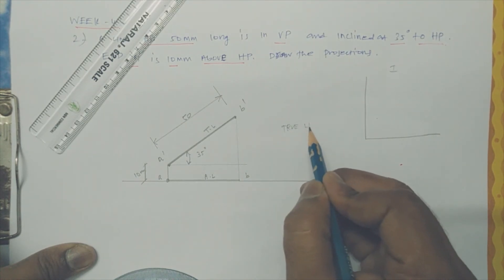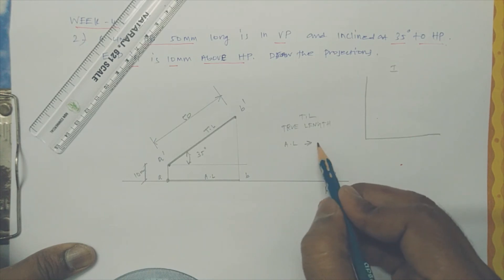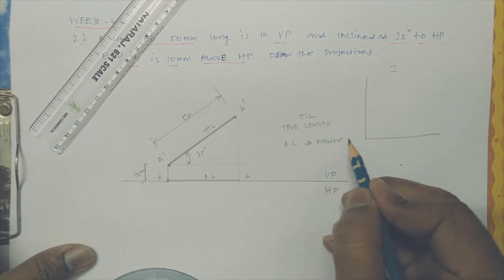True length, TL, or apparent length, or reduced length.